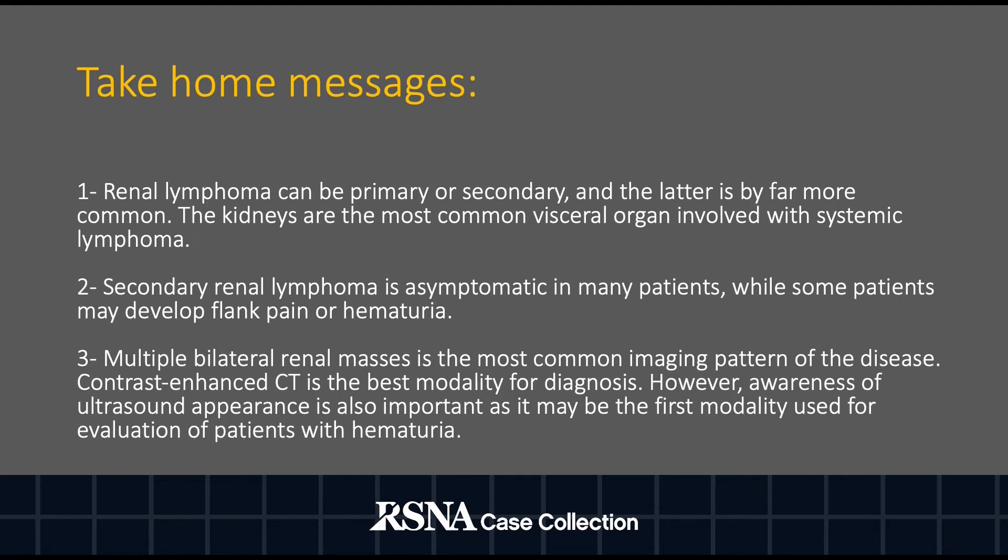Take-home messages: Renal lymphoma can be primary or secondary, and secondary renal disease is by far more common. The kidneys are the most common visceral organs to be involved with systemic lymphoma. Secondary renal lymphoma can be asymptomatic in many patients, whereas some may complain of hematuria or flank pain.